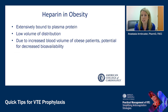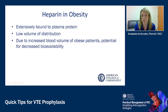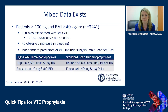Why is heparin something we would think needs to be adjusted in patients who are obese? Heparin is extensively bound to plasma protein and overall has a low volume of distribution. Due to the increased blood volume of obese patients, there is a potential for decreased bioavailability.